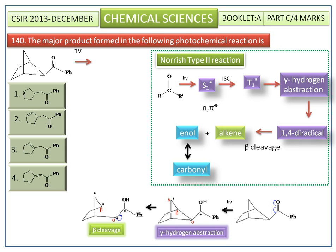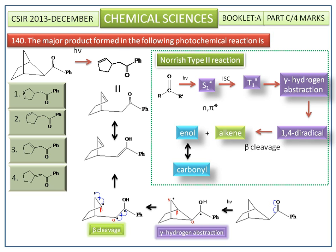These radicals combine together to form an alkene bond, giving alkene and enol functional groups. This is the final product. Checking the given options, the second option has a structure matching the product, so the second option is the correct answer.